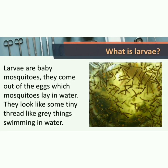Children, have you ever noticed tiny thread-like insects in collected or still water? Those are baby mosquitoes. Larvae are baby mosquitoes. They come out of the eggs which mosquitoes lay in the water. They look like tiny thread-like grey things swimming in water. That is why we should avoid the collection of still water around us.